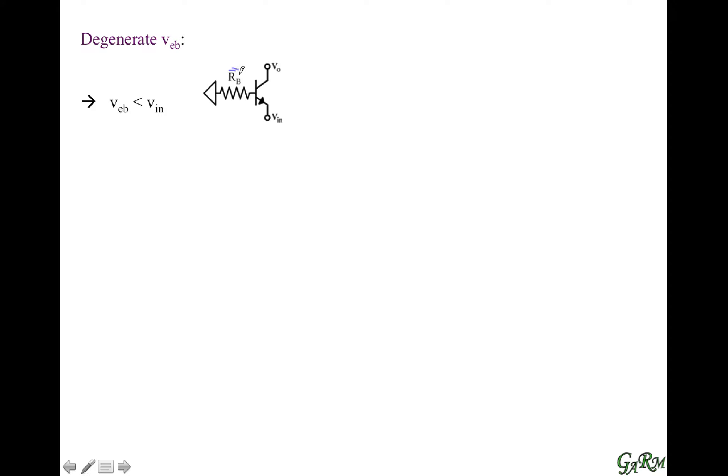In the base-degenerated transistor, we put a resistance in series with the base. So now the emitter-base voltage is a fraction of the input voltage — it's basically lower than the input voltage. As a result, the gm current is going to be lower.